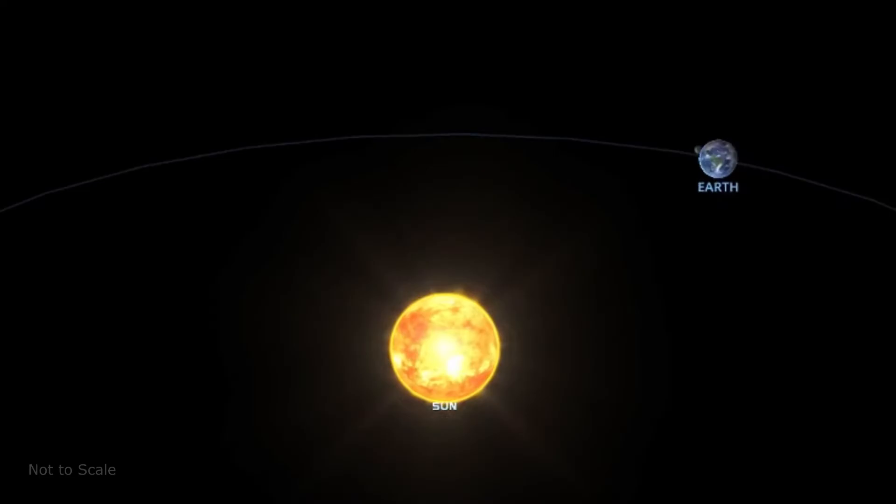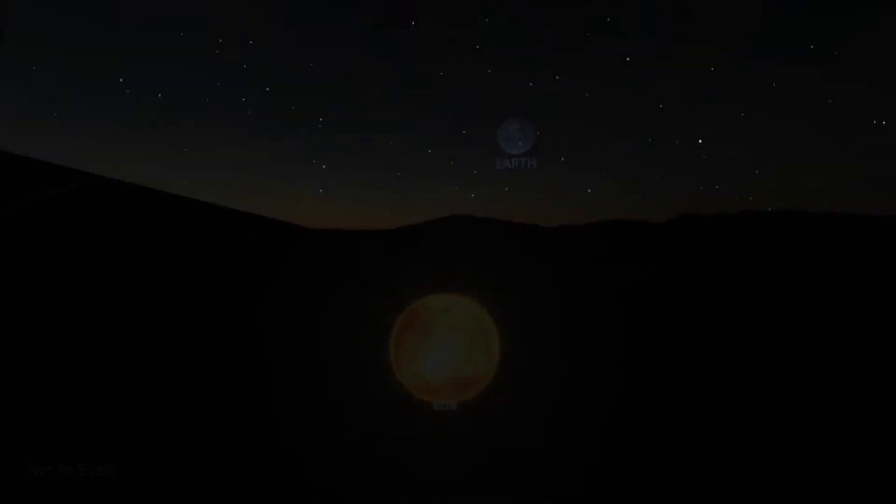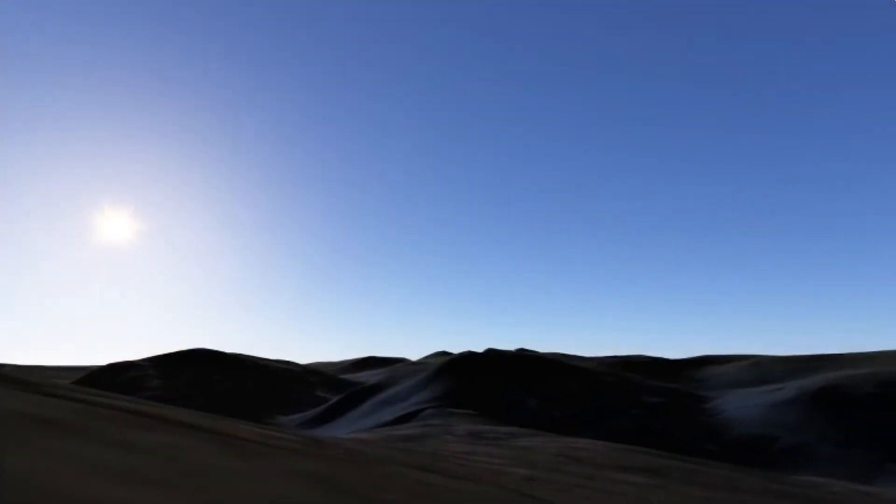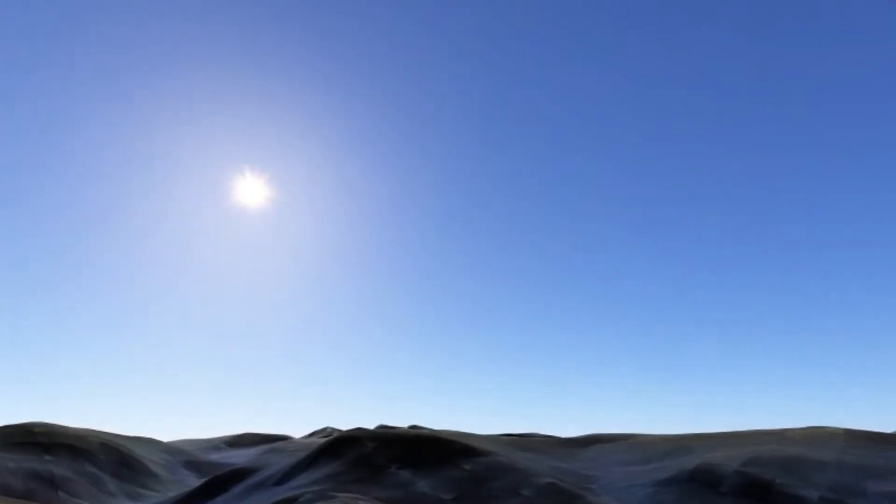The Earth spins each day as it orbits around the Sun once a year. However, from our point of view on the surface of the Earth, it is the Sun that seems to move. Each day it appears to rise, cross the sky from east to west, and set below the horizon.